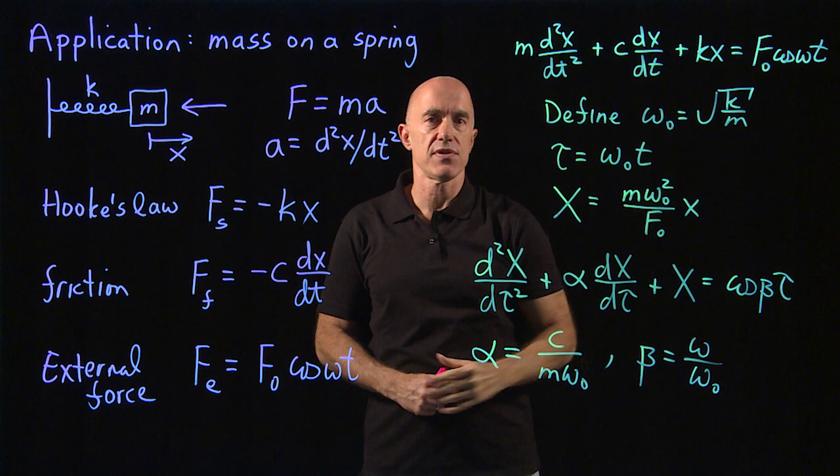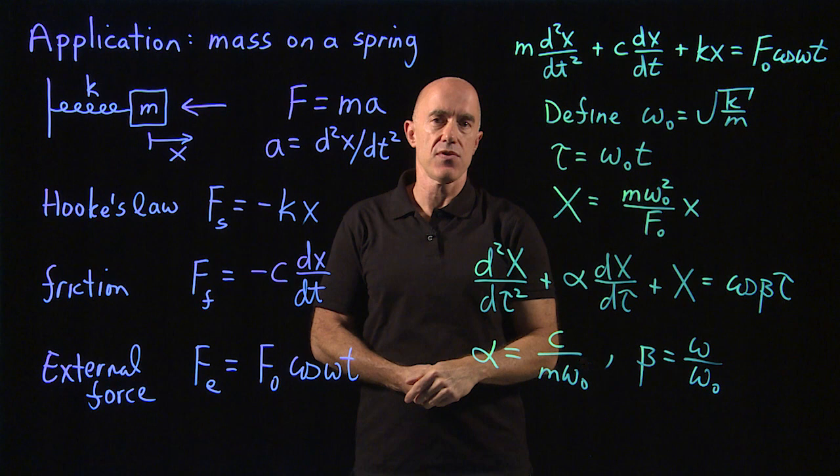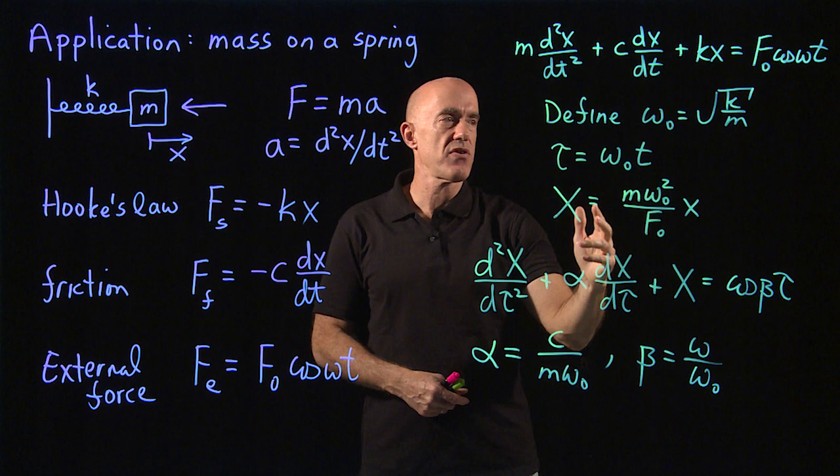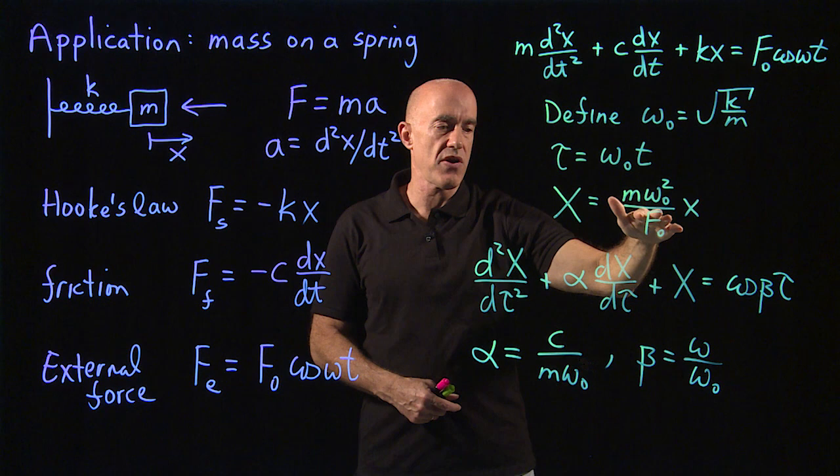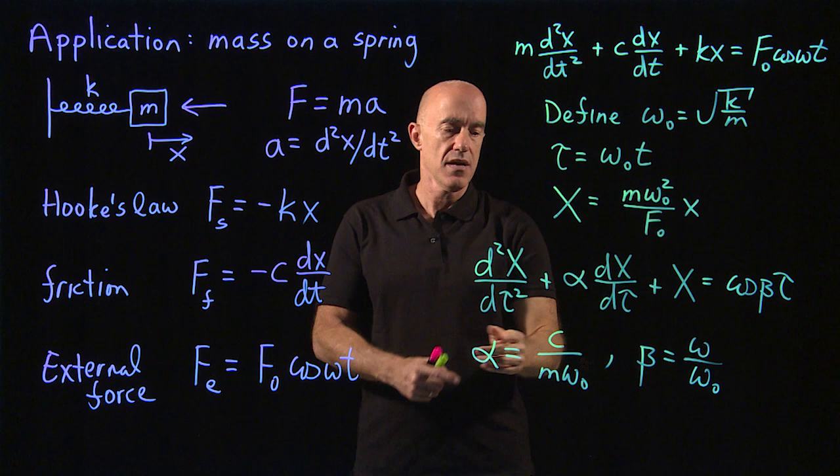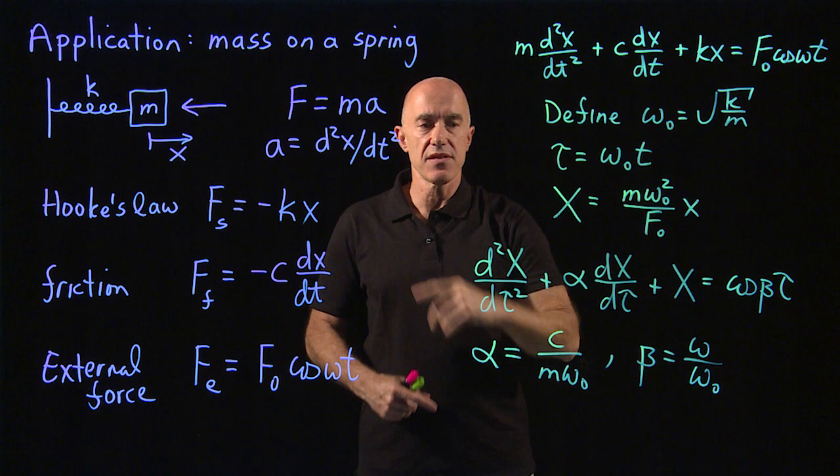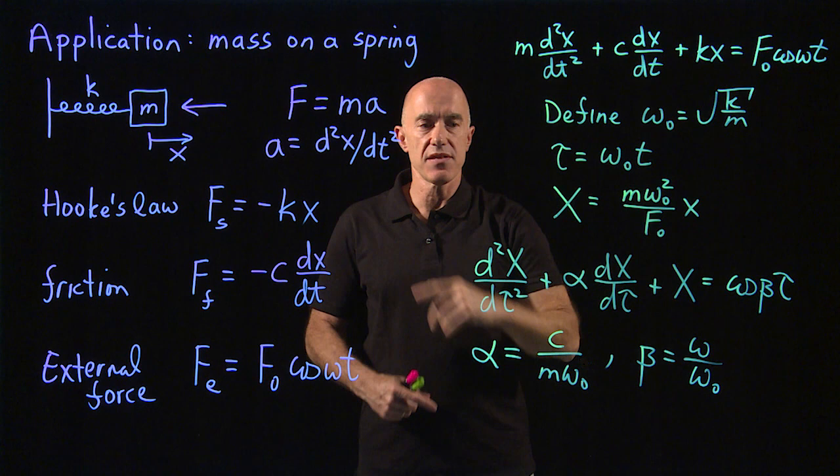Inhomogeneous because of the external force, but with constant coefficients. It looks different than our equation for the LRC circuit. But if we define dimensionless variables using this omega naught squared, which multiplies x after we divide through by m, we obtain exactly the same equation as the LRC circuit, but with different physical meanings of the parameters. That's the beauty of non-dimensionalization.